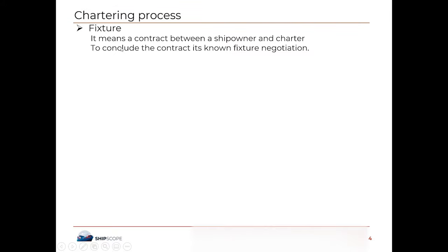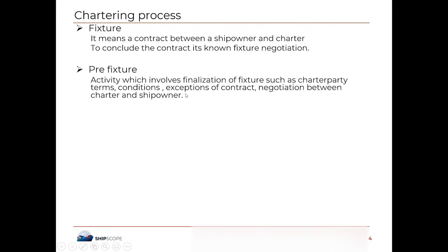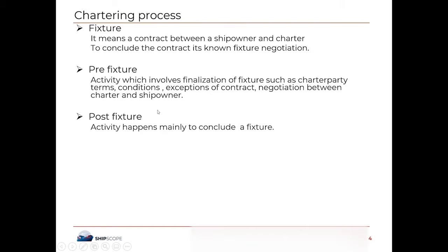The first one is a fixture — a contract between the shipowner and charterer. To conclude the contract, it's known as fixture negotiation. Pre-fixture involves the finalization of charter party terms, conditions, exemptions of contract, and the negotiation phase between the charterer and the shipowner. Then there is something called a post-fixture activity — the activity which happens after the vessel is fixed.